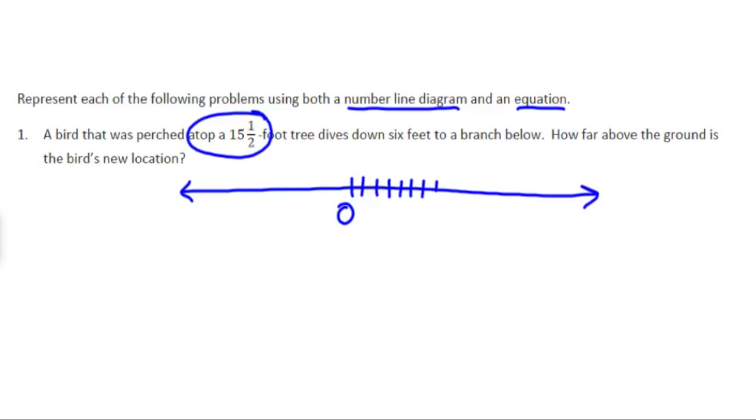So the bird is 15 and a half feet, which means he's between the 15 and the 16. This is where he's starting. Then it said the bird dives down by six feet. Down by six feet means the numbers are going to go lower by six. So he's going to move down by six feet.